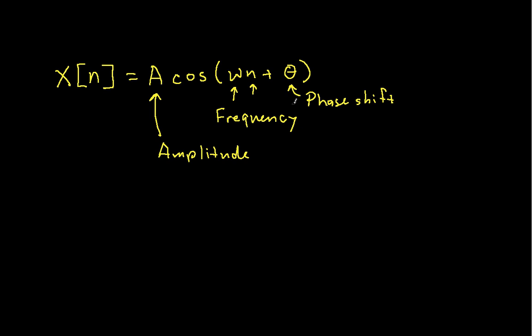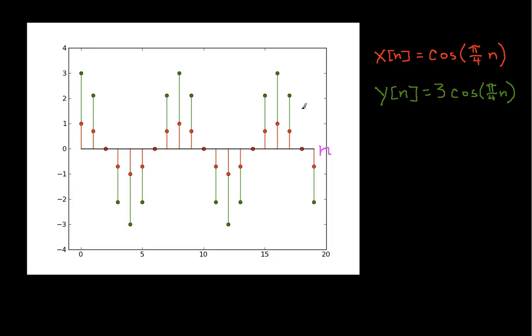So I have a couple plots that show what these different parameters mean. In this plot we have the red signal is just cosine pi over 4n with an amplitude of 1. The green signal is 3 cosine pi over 4n. This guy has an amplitude of 3. And you can see on the graph over here that indeed the 3 cosine pi over 4n terms are 3 times as large as the cosine pi over 4n terms.